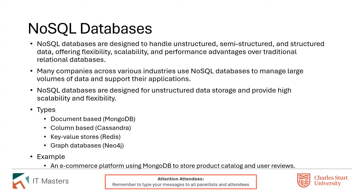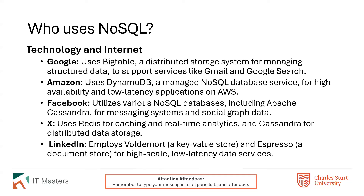There are different types of NoSQL databases. A lot of e-commerce platforms will use MongoDB, which is document-based, to provide catalogues, user reviews, and target customers with various products. The choice of which NoSQL database — document, column, key-value, or graph-based — depends on the actual industry you're in and how you're trying to interpret and query the data coming into your big data system.